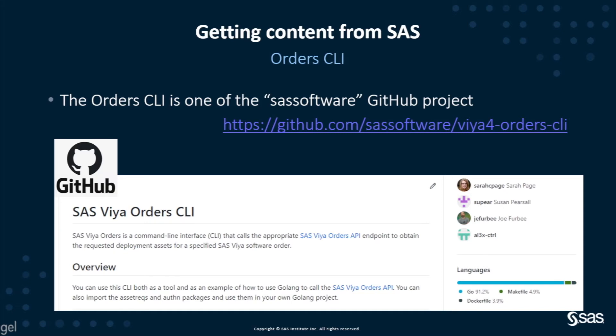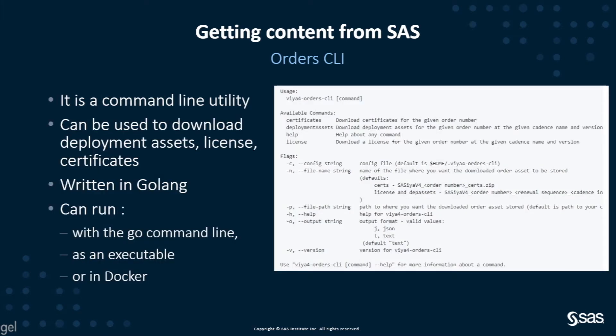The tool we want to look at today is called viya4-orders-cli. It is a command line utility. You have different ways to use it: the command line could be using Golang, or you could directly call the executable, or it could be a Docker command line. We may want to use the container version of the tool.